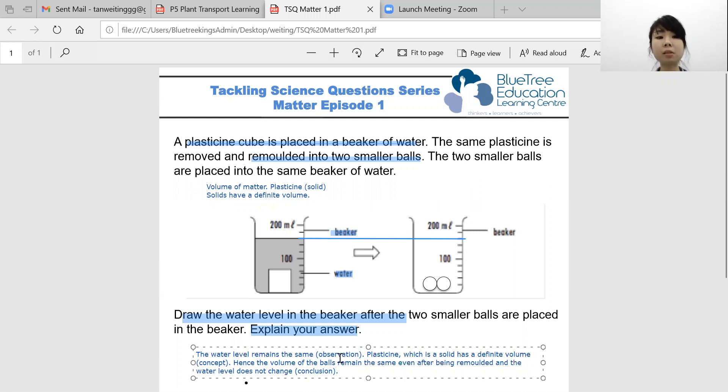So a point to note is students may be confused that since there are two balls at the end versus a single cube at the start, the volume should increase. So we need to remind them that although there are two balls, these two balls originated from the single cube at the start, which is the plasticine, which is a solid that has a definite volume. And so the volume of the water should remain the same.